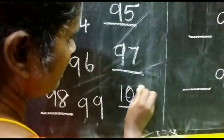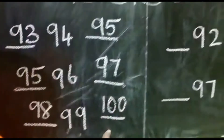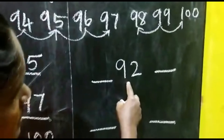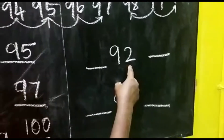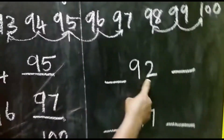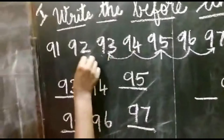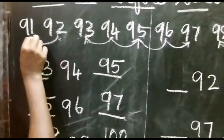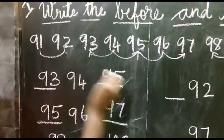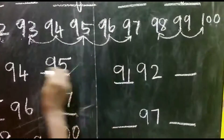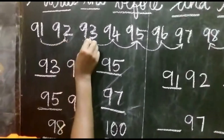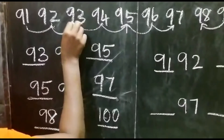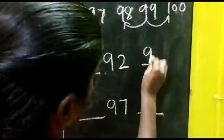They are right. Okay children, the next number — what number is there? 92. Here 92 is there. Now 92 before number is 91. 92 after number is 93.